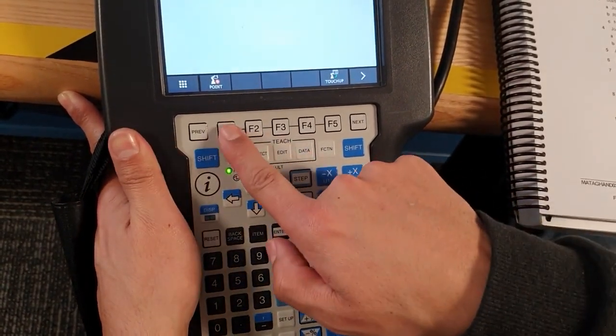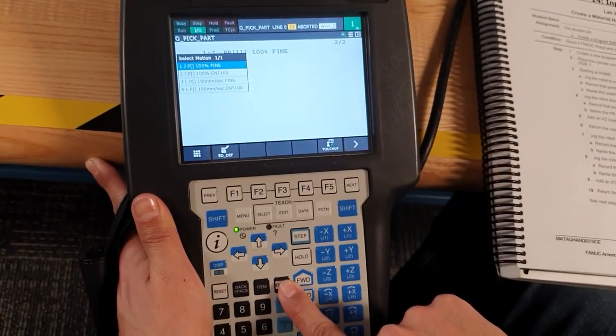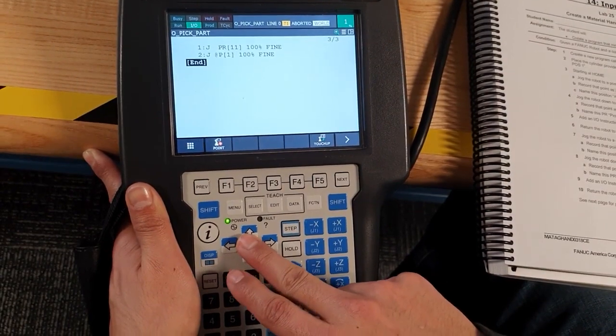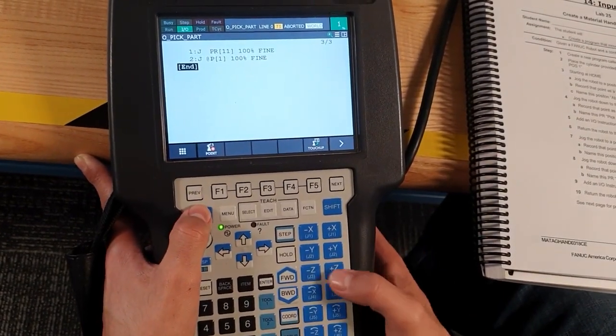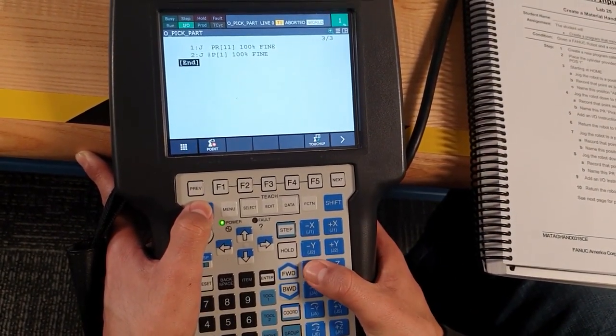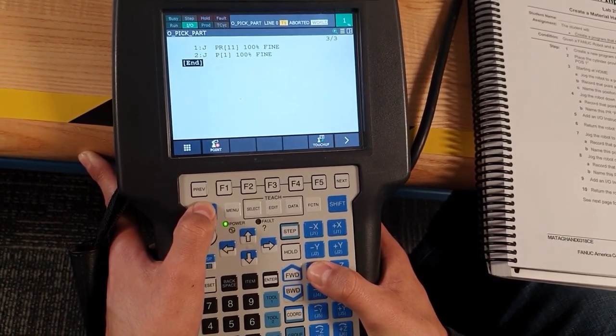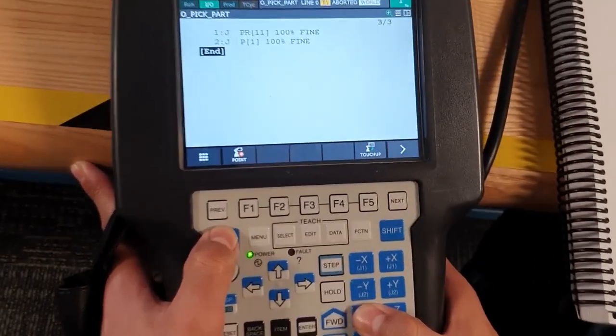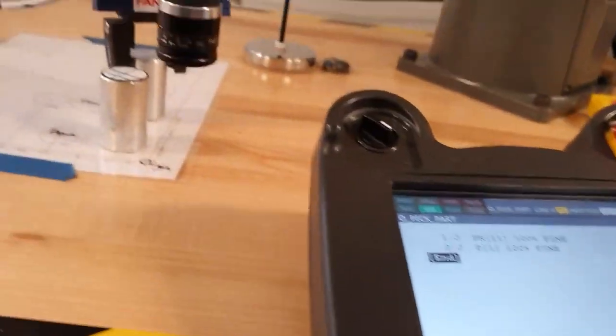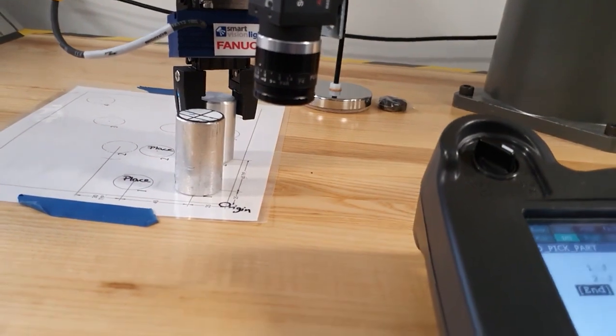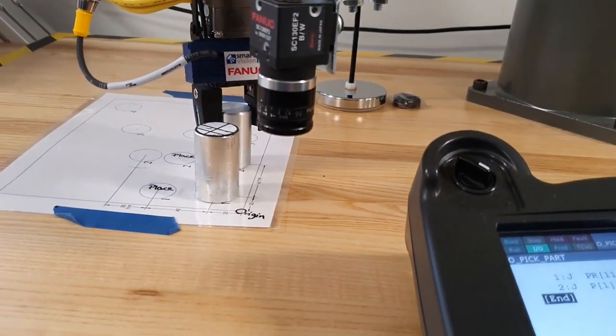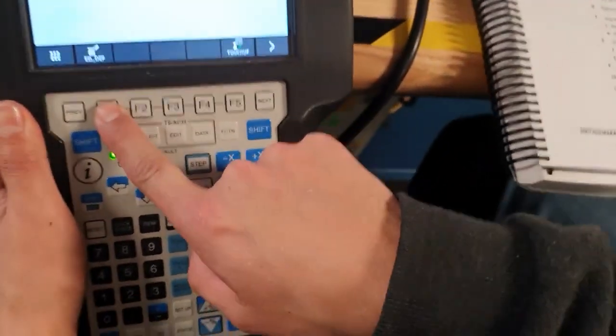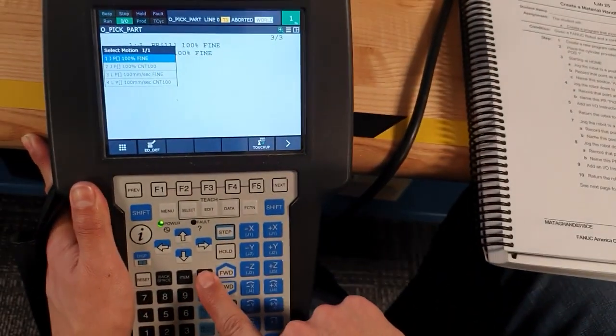After that we are going to press joint and enter and the position is recorded. And after that we are going to move negative C, negative C, and then we are going to save the point. We are going to save the point, save.